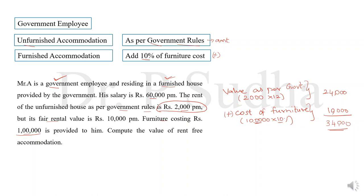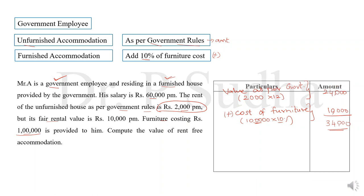So, calculation of rent-free accommodation for a government employee is very easy. If it is unfurnished accommodation, use the value as per government rule. If it is furnished accommodation, add the cost of furniture at 10%.